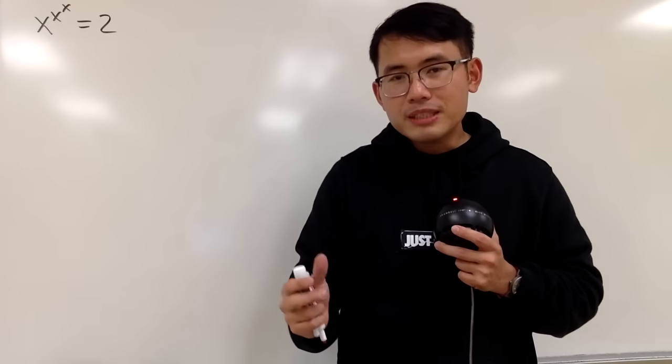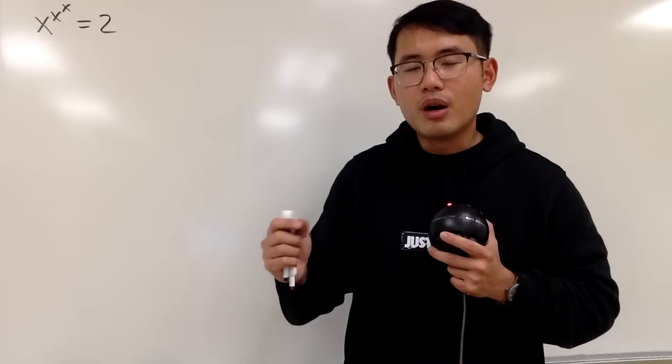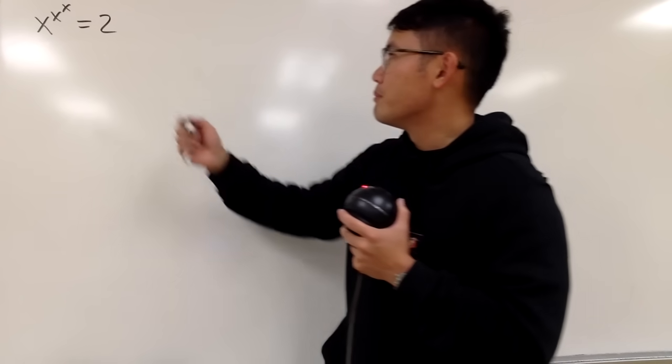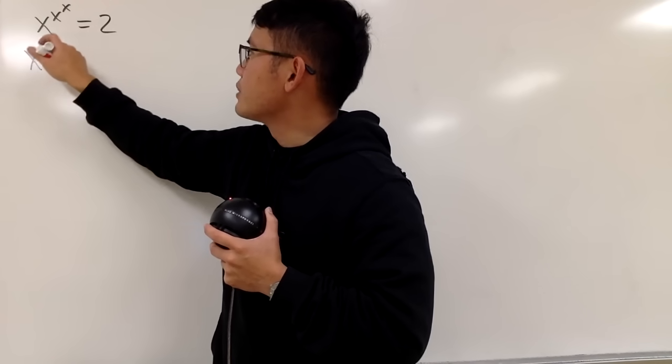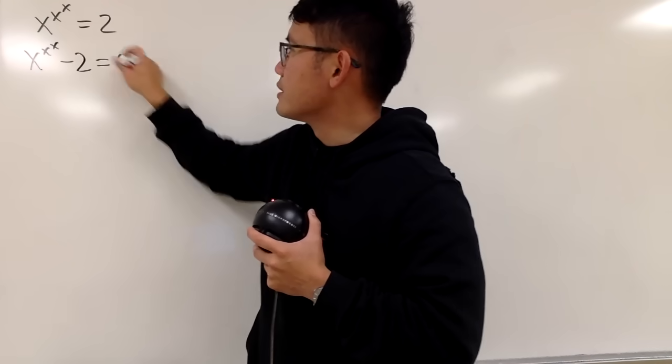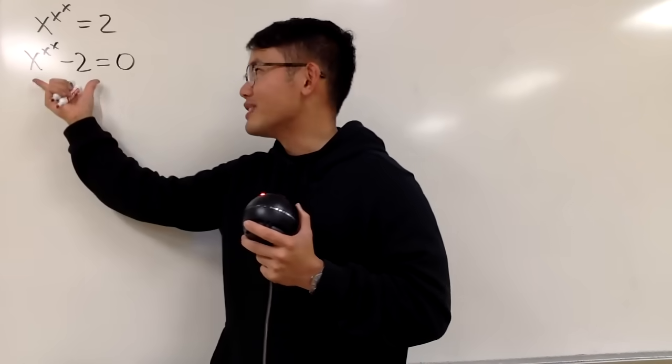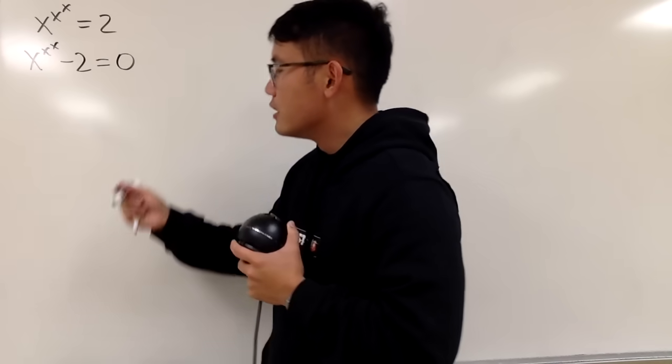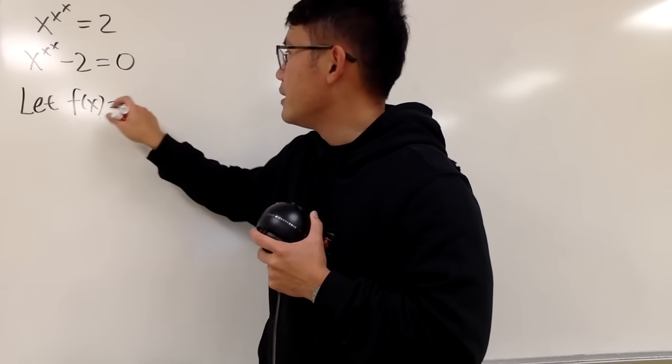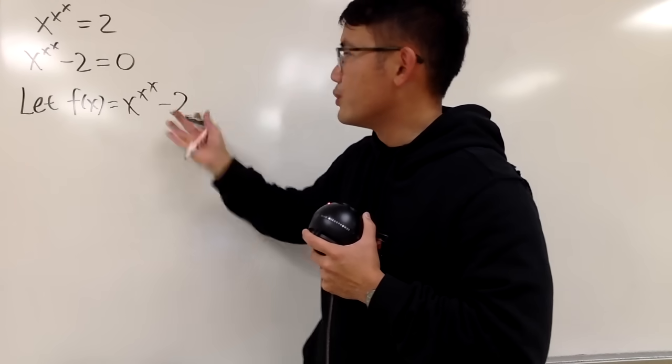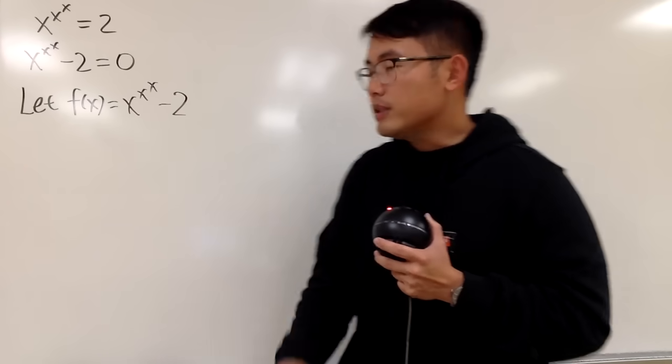And remember, Newton's method is to find the zero of a function. So we can look at this equation and minus 2 on both sides. We get x to the x to the x minus 2 equals 0. And then we can just take this part to be my function. So I'll write this down: let f of x be x to the x to the x minus 2.